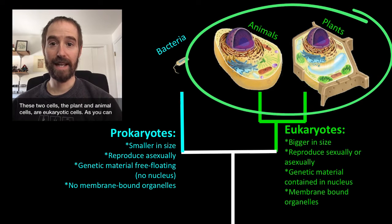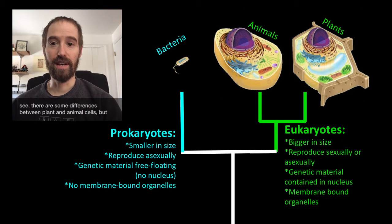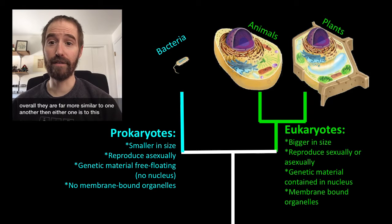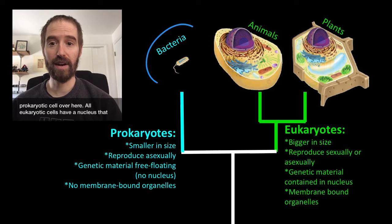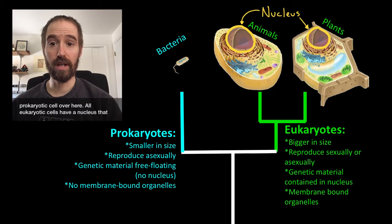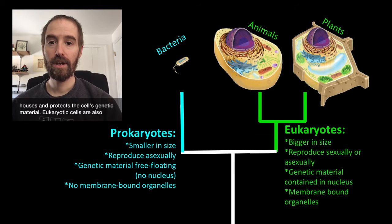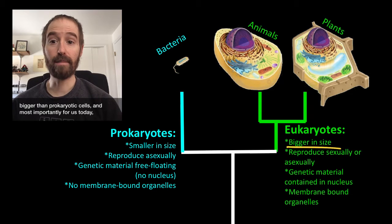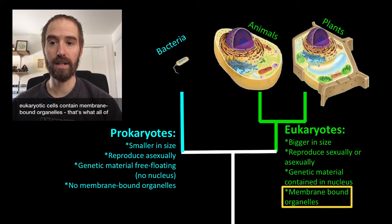These two cells — the plant and the animal cells — are eukaryotic cells. There are some differences between plant and animal cells, but overall they are far more similar to one another than either one is to this prokaryotic cell over here. All eukaryotic cells have a nucleus that houses and protects the cell's genetic material. Eukaryotic cells are also bigger than prokaryotic cells, and most importantly for us today, eukaryotic cells contain membrane-bound organelles.